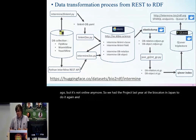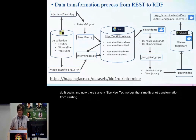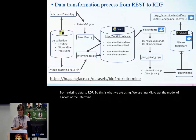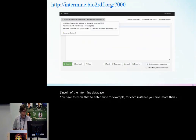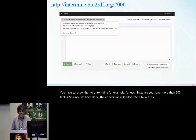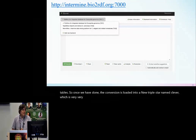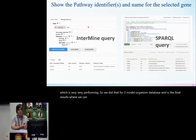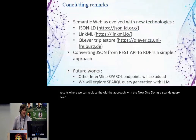There is now a very nice new technology that simplifies transformation from existing data to RDF. We use LinkML to get the model of the InterMine database. Each InterMine instance has more than 200 tables. Once we have done the conversion, it's loaded into a new triplestore named Oxigraph, which is very high-performing. We did that for three model organism databases. The final results show we can replace the old approach with the new one, doing a SPARQL query over InterMine — and we get the same answer, which is proof that the conversion works.